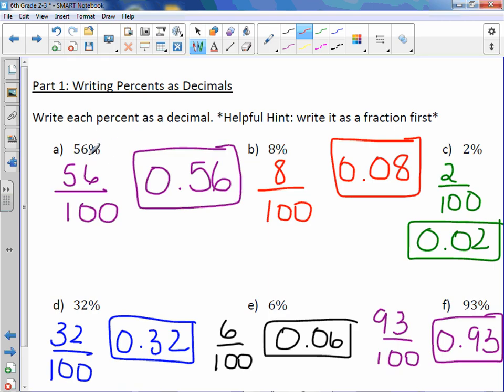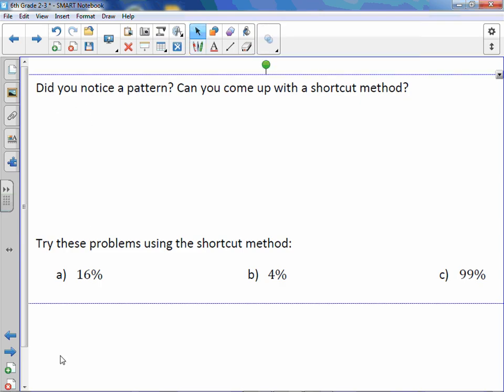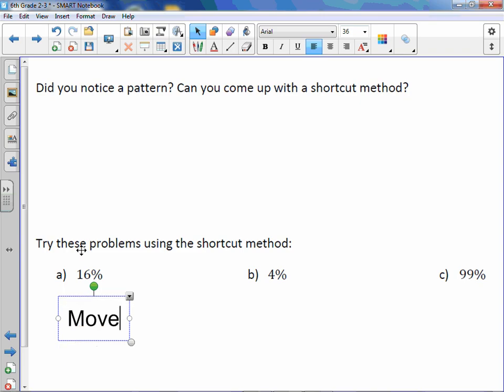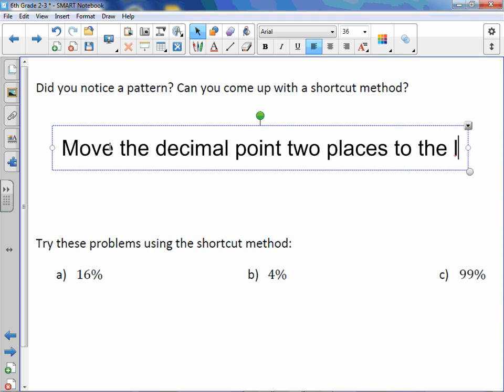You take your percent and the decimal at the end - if a decimal is not written in a number, it's at the end on the right. When you divide by 100, all you did was take that decimal point and move it 2 to the left. When you have an empty space, you fill it with a 0. So the shortcut is to move the decimal point 2 places to the left.